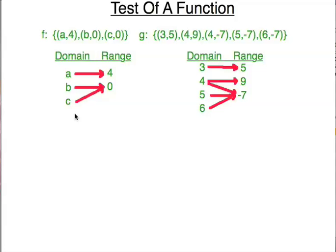The men must have only one partner from the range of women. If they have more than one partner, it's not a function. It's okay for a member of the range — the women — to be paired up with more than one from the domain, but the men have to have only one partner from the range. So yes, function f is a function because each x-value has only one corresponding y-value. The zero in the range is paired with two domain values, but that's okay — women can have more than one square dance partner.